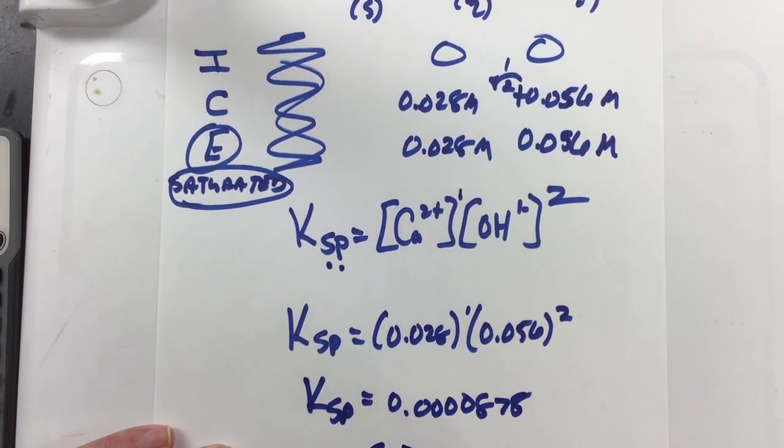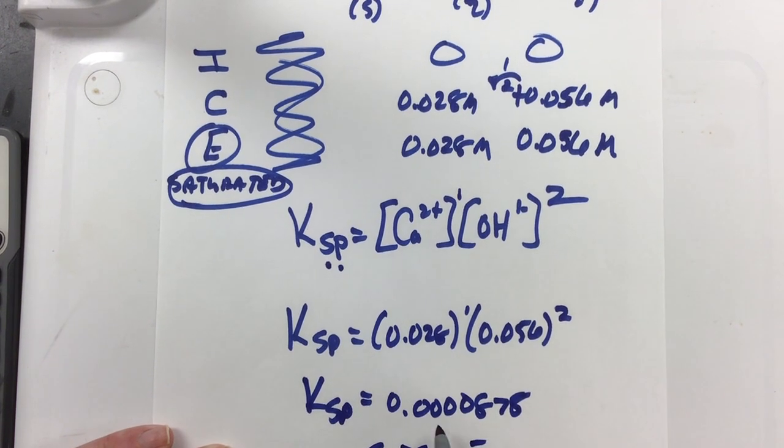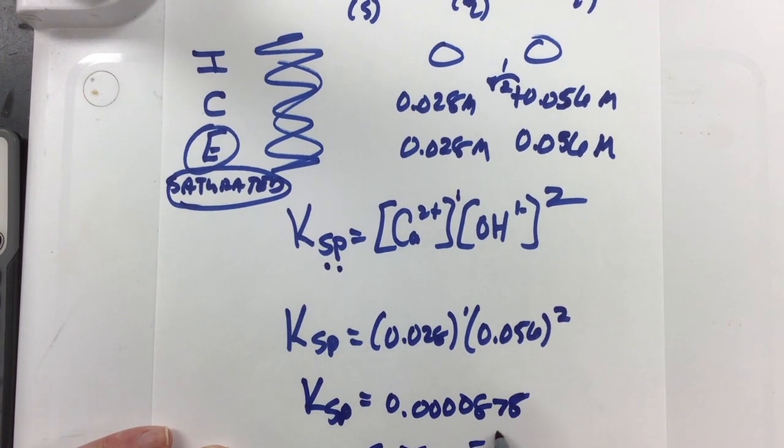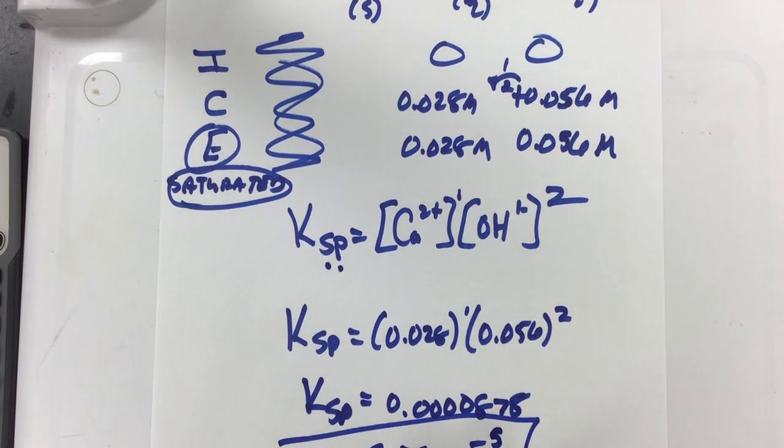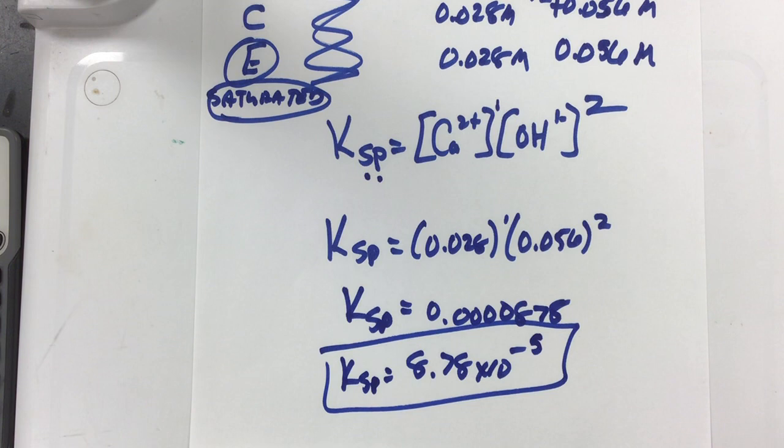And so this is going to be 8.78 times 10 to the negative fifth. So that is our KSP value, that is our calculated KSP value, 8.78 times 10 to the negative fifth.